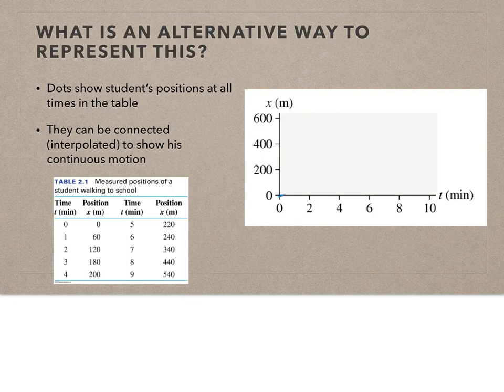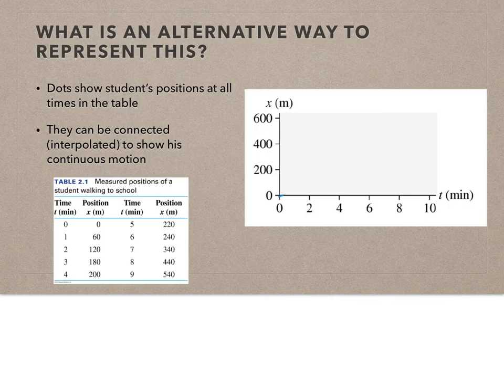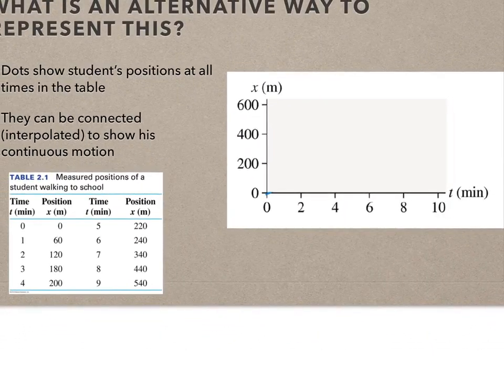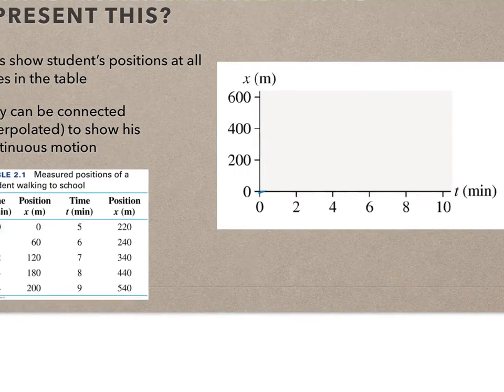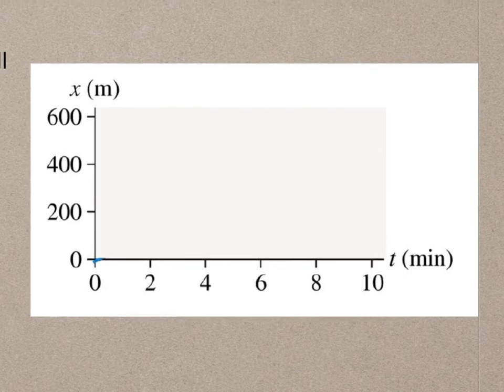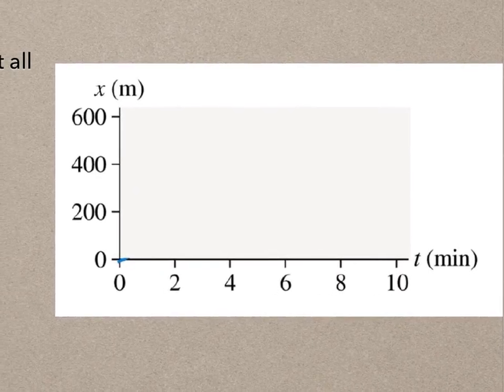An alternative way to express this besides just the data and the motion diagram is using a graph, and it's something we've done before. We're going to look at this very specifically with motion and start applying rules, mostly relating to slope. I'm going to zoom in — I have my data there: 60, 120, 180, 200. I'm going to pause here and fill this in.